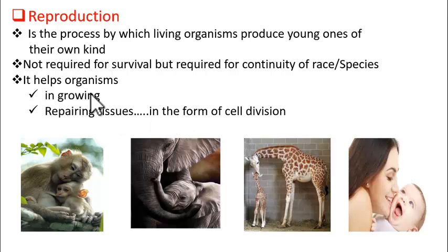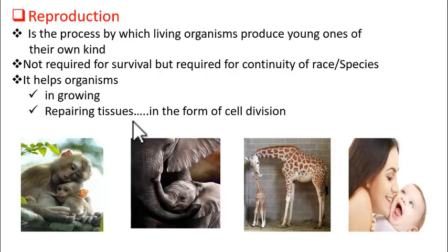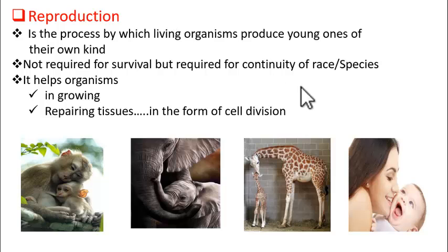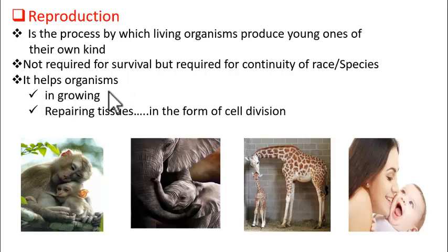Reproduction helps organisms in growing. Another application is that reproduction helps in the repairing of tissues. Whenever we get wounded, the wound soon heals by the formation of new cells, and those new cells come about through cell reproduction, called cell division. So at the organism level, reproduction helps in continuity of races or species and also helps in the balance of the environment. At the cell level, it helps in growing and also in repairing of tissues.